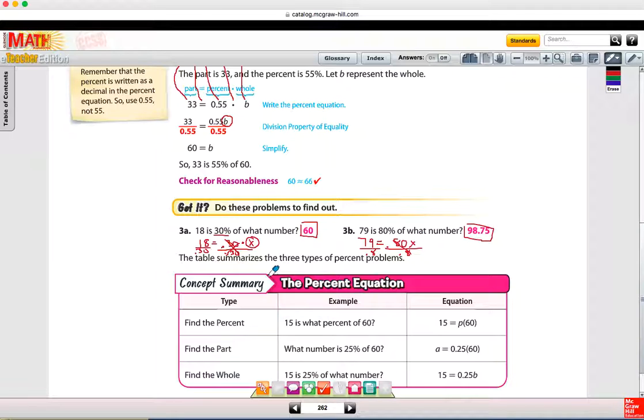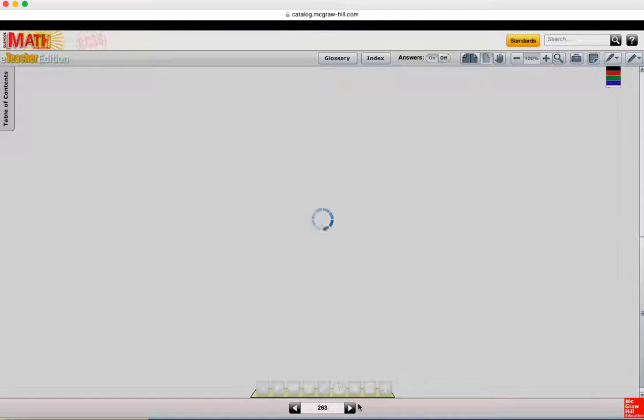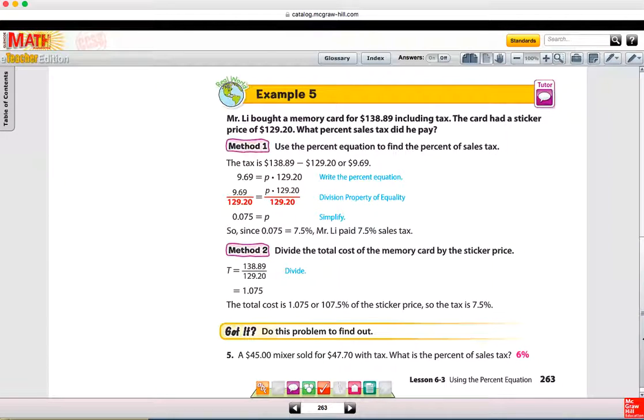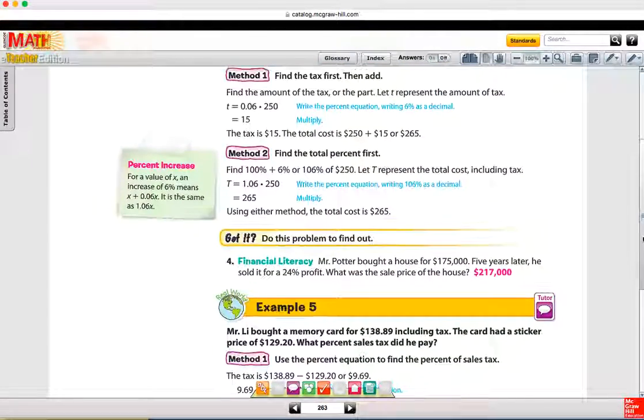In your notes, you have this concept summary chart, and I would like for you to copy down the example and the equation, just knowing that the equation sometimes has P in the percent position, or in the part position, or in the whole position, just like we saw with the proportion. We've looked at a proportion method, and a mental method, and an equation method now.